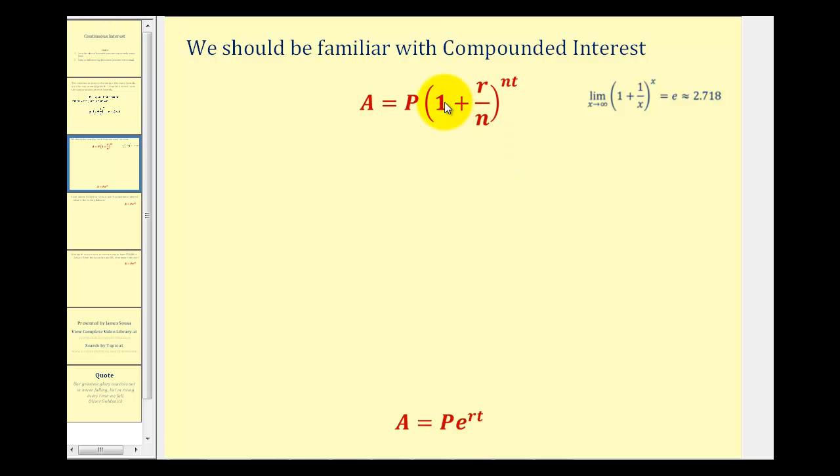So to show this, we're going to manipulate the right side of this equation. The first thing we're going to do is rewrite r divided by n as one divided by the reciprocal of this, or one divided by n over r. So we'd have A equals P times one plus one divided by n divided by r, or n over r.